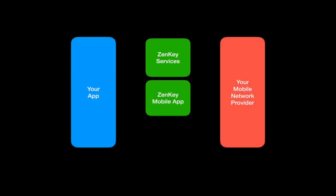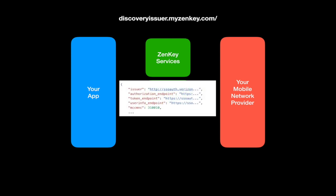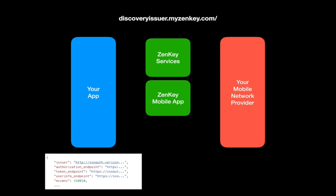Let's talk through the flow that allows you, as a developer, to leverage the identity information of all of these major network providers through one simple unified user flow. First, we'll connect to the ZenKey services to perform a process called discovery. Through this process, we obtain an authorization, token, and user info endpoint. This is what allows ZenKey to dynamically choose the right network operator for each of your unique users. You get to leverage the power of one identity platform, served by all the major mobile network operators.